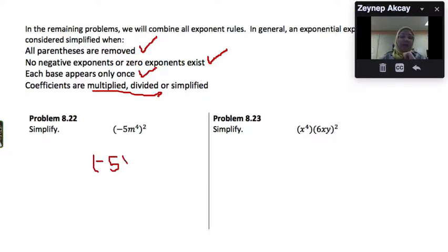So negative 5 raised to the second power, and this is going to be multiplied by m to the fourth raised to the second power.